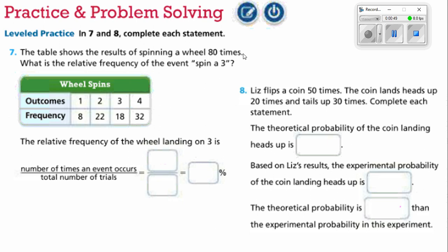But that's not what the experimental probability guarantees. Remember, it's just what should happen, not necessarily what's going to happen. So the relative frequency of the wheel landing on 3 is 18 out of 80. That's the number of times an event occurred, 18 times it landed on 3, out of the total number of trials, and that's 80. 18 divided by 80 is 22.5%.